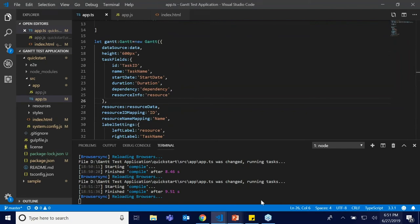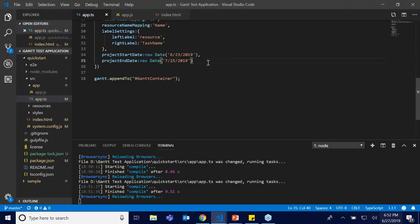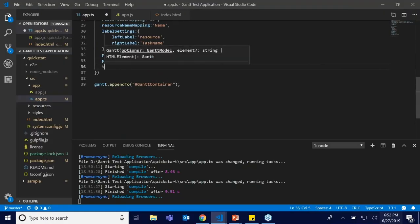What's next is the advanced timeline feature. The Gantt has multiple built-in timeline modes: week, month, year, day, and hour. It has one-tier and two-tier timeline support and accepts custom text to be displayed within the timeline. You can display project data from minutes to decades in Syncfusion Gantt chart. Let's jump in to work with the timeline features — to customize the default timeline I'm going to initiate the timelineSettings API.